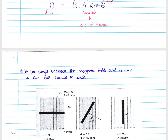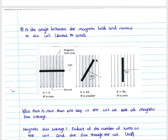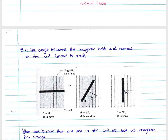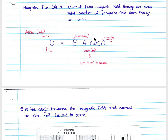Theta in our cos theta is the angle between the magnetic field and the normal to the coil, or the normal to the area through which the magnetic field lines are flowing. Looking at an example where theta equals zero — because our normal to the coil is parallel to our magnetic field lines — our magnetic flux is at its maximum. As the angle gets larger and we approach 90 degrees, our magnetic flux gets smaller, and at 90 degrees it is zero because cos 90 is zero.